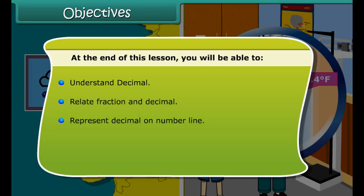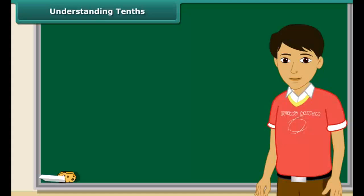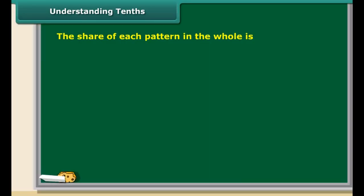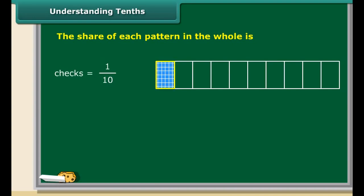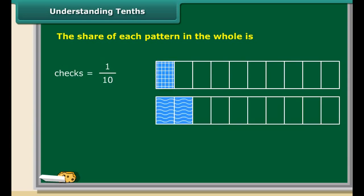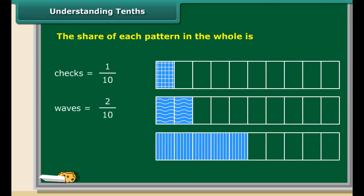Let us understand the concept of decimals using fractions with denominator 10. Consider the fraction bars. In the first bar, only one out of the ten blocks has checks. In the second bar, only two out of the ten blocks have waves. Similarly, in the third bar, five out of the ten blocks have stripes.